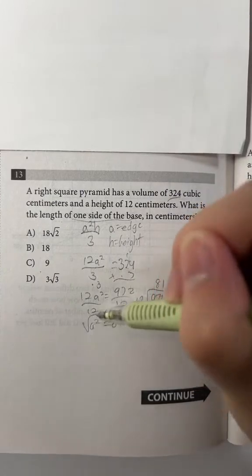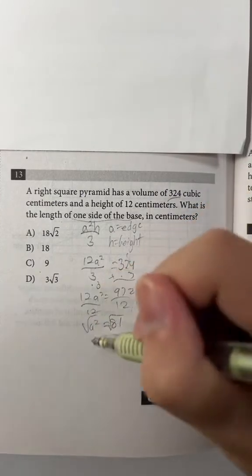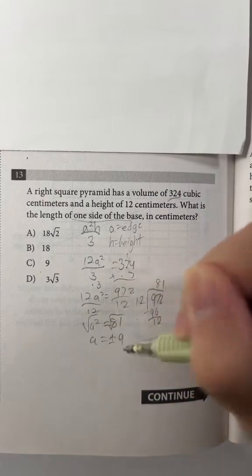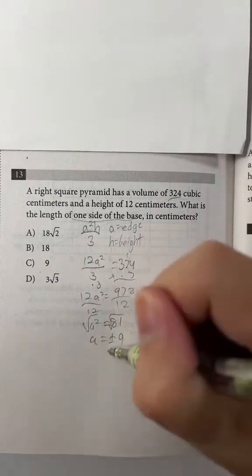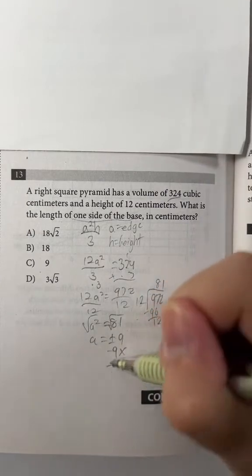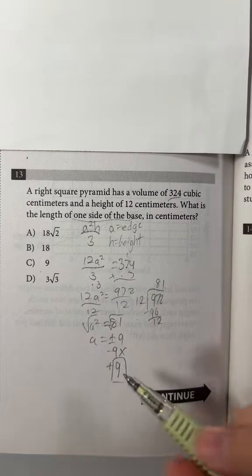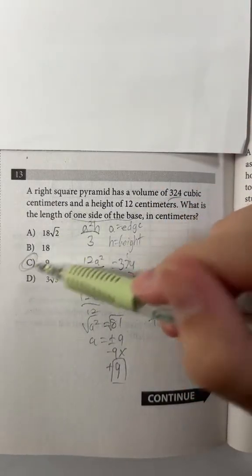So now let's take the square root to get rid of the square, and that gives us a equals plus or minus 9. But we know a side can't be a negative number, so it cannot be negative 9, meaning it has to be positive 9. So 9 is our answer, and if we're given the choices, our answer is C.